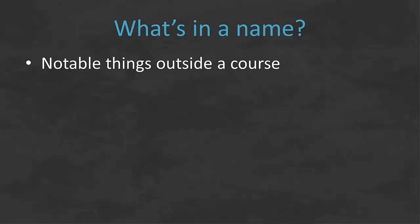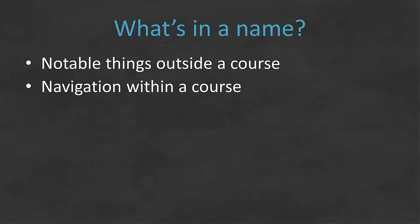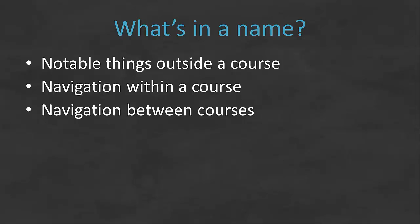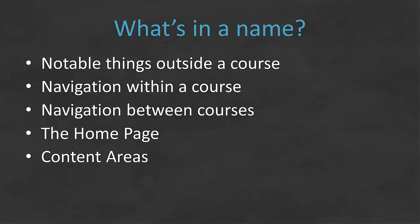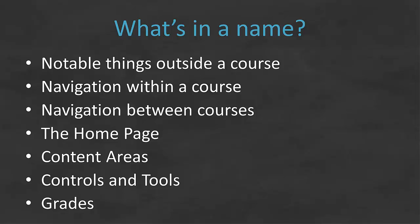We're going to talk about the things that are outside of a course — the different tabs and modules to get into courses. Then we'll talk about navigating inside a course, mostly through the breadcrumb trail, and navigation between courses using a special tool. We'll spend time on the home page, content areas, the controls and tools on the left-hand side, and a bit about the grading tool — how to add it so students can see their grades.